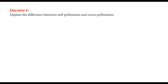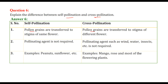Difference between self-pollination and cross-pollination: in both cases, pollen grains are transferred. In self-pollination, pollen grains are transferred to the stigma of the same flower. In cross-pollination, pollen grains are transferred to the stigma of a different flower. In self-pollination, no pollinating agent is required, but in cross-pollination, agents like wind, water, and insects are required. Examples of self-pollination are peanuts and sunflower. Examples of cross-pollination are mango, rose, and most flowering plants.